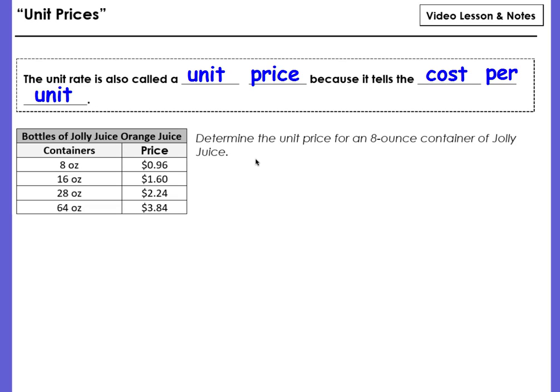So let's do this example. We want to determine the unit price for an 8 ounce container of Jolly Juice. Well an 8 ounce container of Jolly Juice is 96 cents. We want to know the unit price. How much does it cost for one?